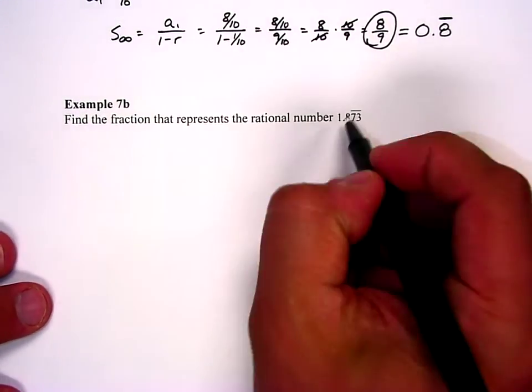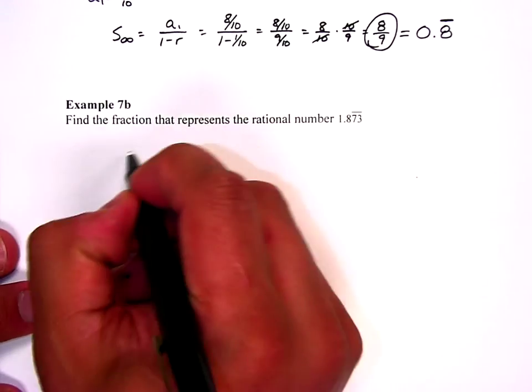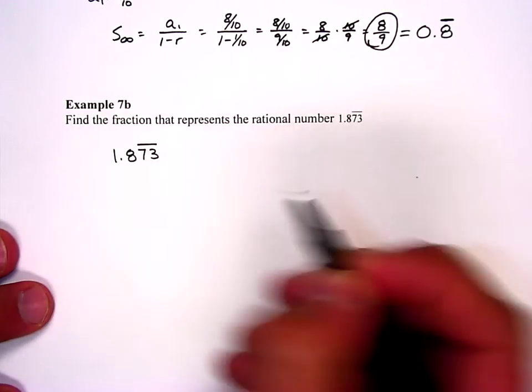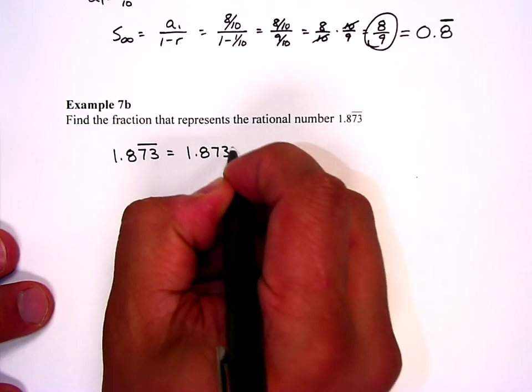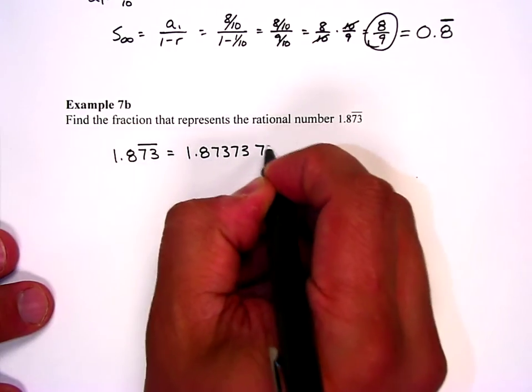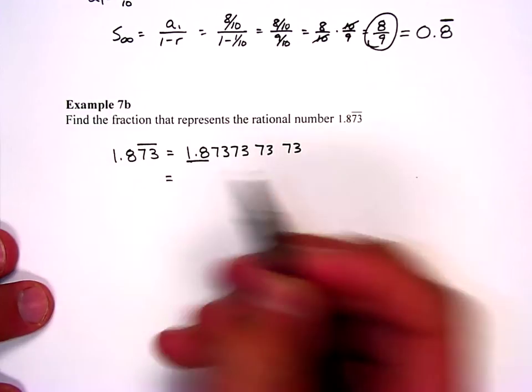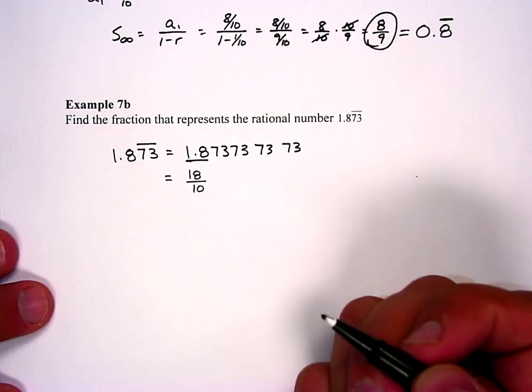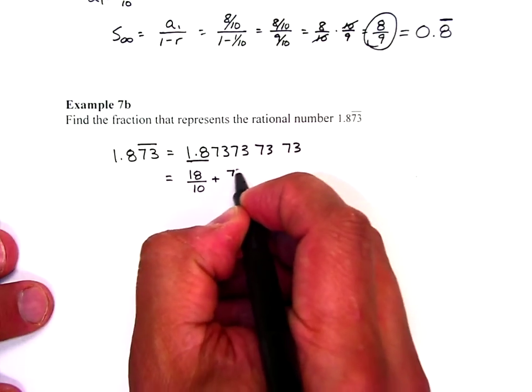Now example 7b is the same idea except it has this 1.8 that's not repeating. If I think about this 1.873, the 7-3 is what's repeating. So it's 1.873, 7-3, 7-3, 7-3. If I take just this 1.8 that's like 18 over 10. 18 tenths is the same as 1.8. And then I have this 73.